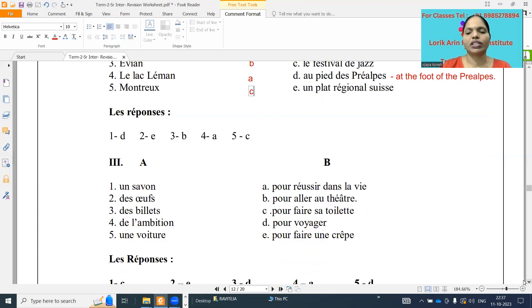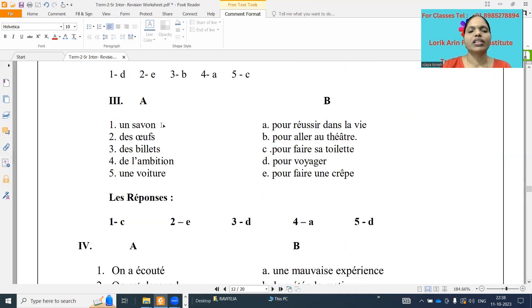And the next one, question trois. Question number three. C, un savon. Savon means what it is? Soap. And des œufs. Œufs means what it is? Eggs. And des billets. Next one, de l'ambition. Ambition. And une voiture. So, a car.